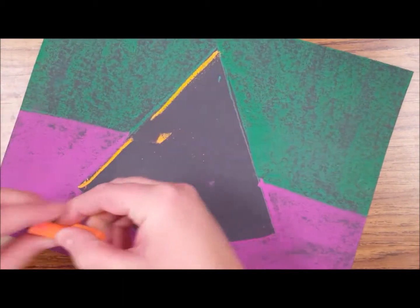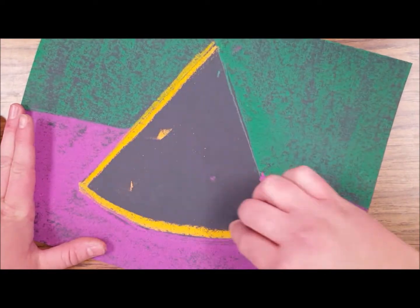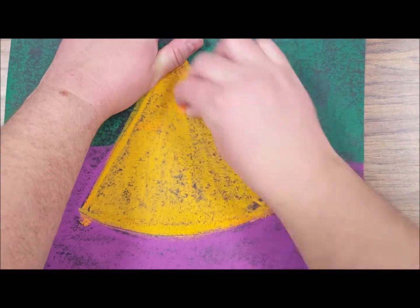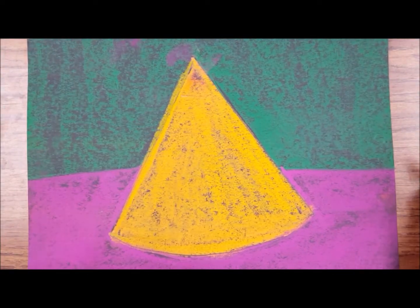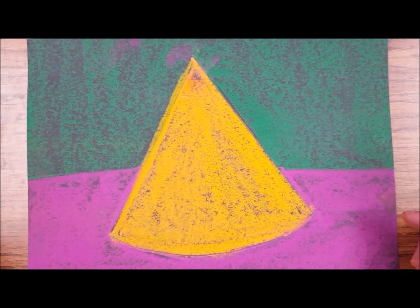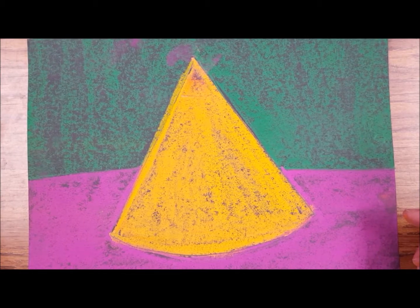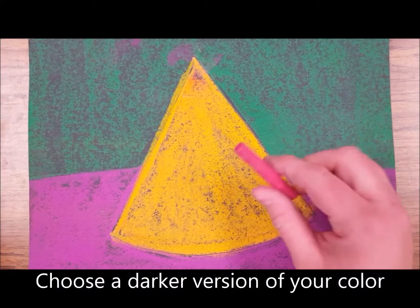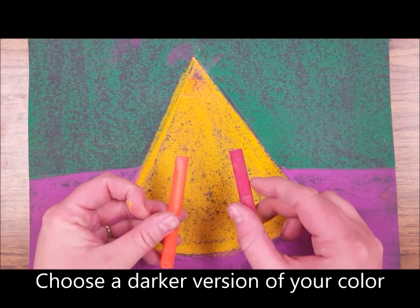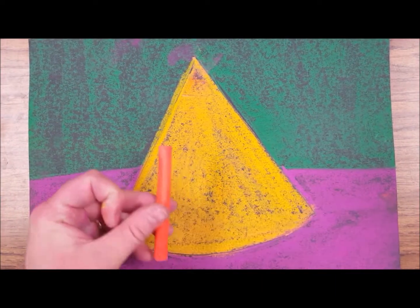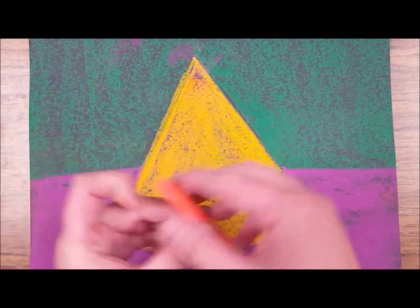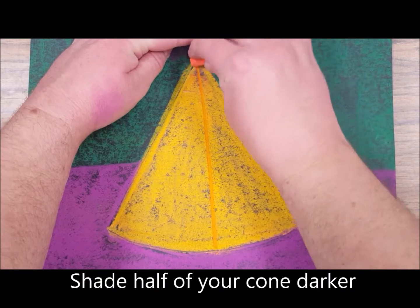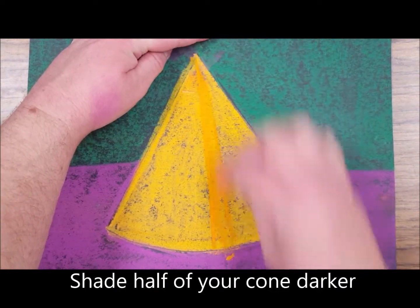Now I'm ready to start my shading to make it look 3D. So I'm actually going to take a darker color. I could either use a darker orange or red. I'm going to try the darker orange first and I'm going to shade half of it that darker color.